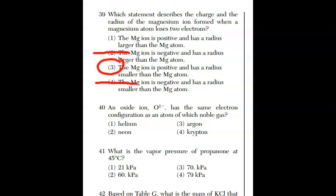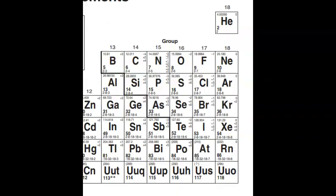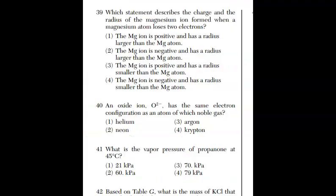For 40, an oxide ion, or O2-, has the same electron configuration as an atom of which noble gas? Let's go to the periodic table for this. We have oxygen. Oxygen gains two electrons. And you move two spaces to the right, literally. And what noble gas is it? Neon. That makes our answer for question 40, choice 2.